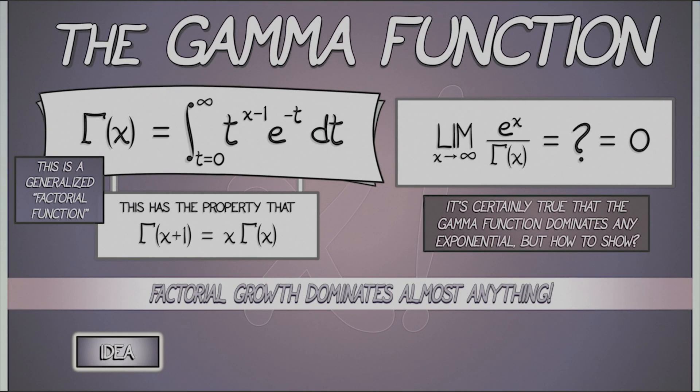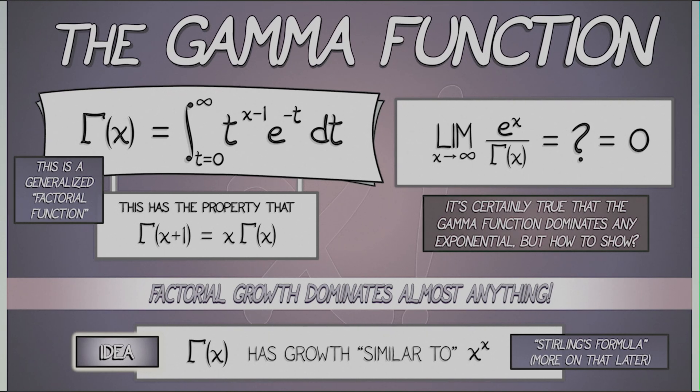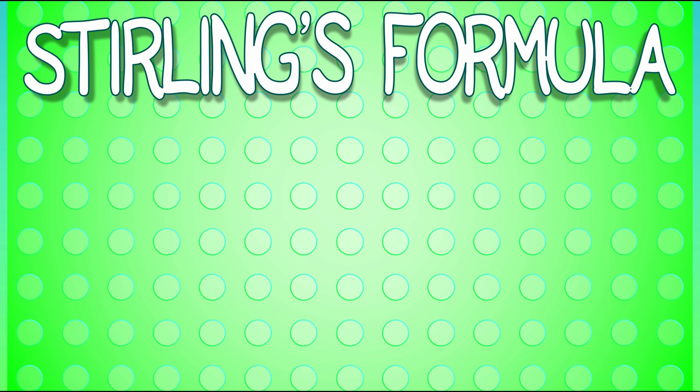Think back to the previous chapter when we talked about the gamma function, gamma of x, that is kind of like a factorial function. We said that it grows fast, really fast. It grows kind of like x to the x, but not exactly. What exactly is the growth rate of gamma of x is contained in a wonderful formula called Stirling's formula. This is an asymptotic expansion of the gamma function.